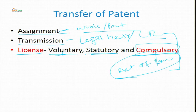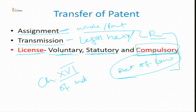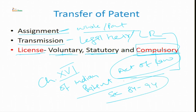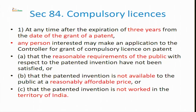The most important thing now is compulsory licensing, which is given under section 84 and in chapter 16 of the Indian Patent Act. Under chapter 16, there are sections from 84 to 94 that specifically deal with compulsory licensing. Although there are not many compulsory licenses granted — only one single compulsory license was granted in the case of NatCo — we will discuss that in detail later. The main provision is section 84.